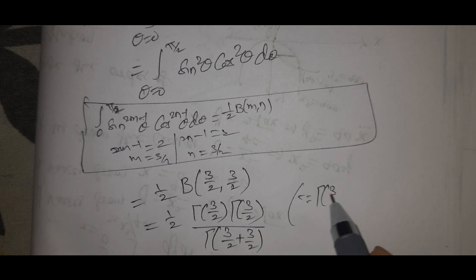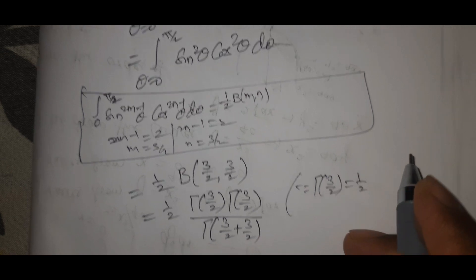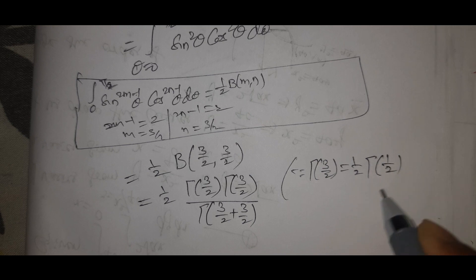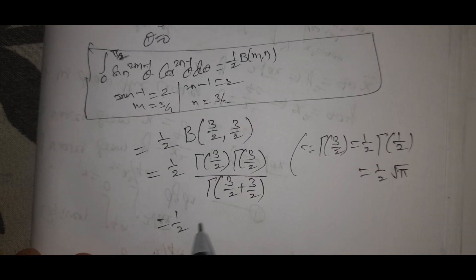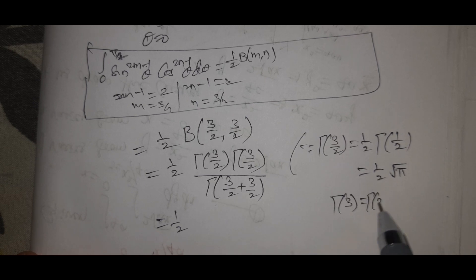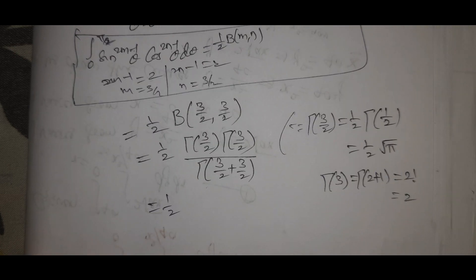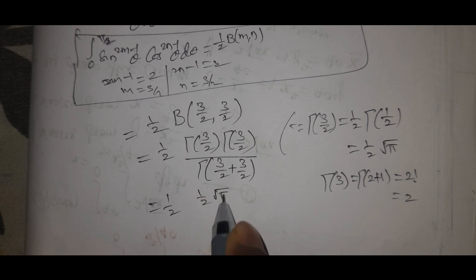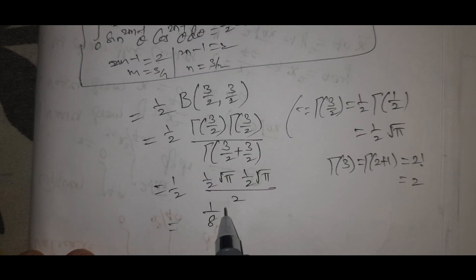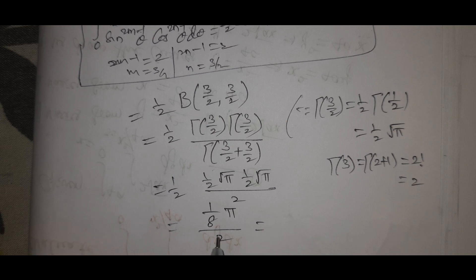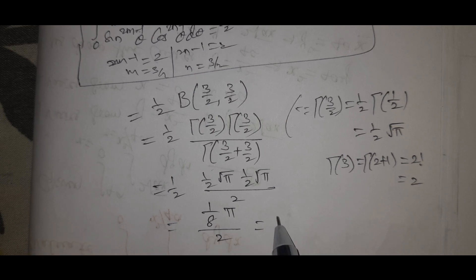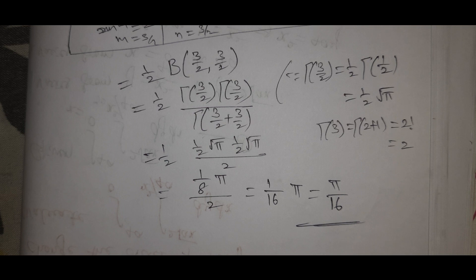Using the Gamma relation, Gamma of 3 by 2 equals 1 by 2 times root pi. And Gamma(3) equals 2. So the expression becomes one half times (1/2 root pi) times (1/2 root pi) divided by 2, which gives one half times pi over 4, divided by 2, equal to 1 by 2 into 1 by 8 into pi, giving pi by 16. This is the solution. If you have any doubt, please comment, subscribe my channel, and don't forget to like and share. Thank you.